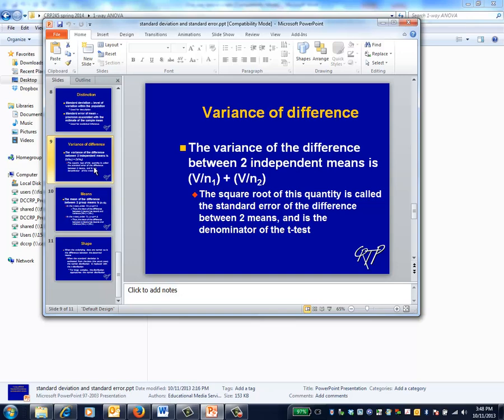Following the same logic, the variance of the difference between the means of two independent samples is given by the formula on the slide. The square root of this quantity is the estimate of noise used in the t-test.